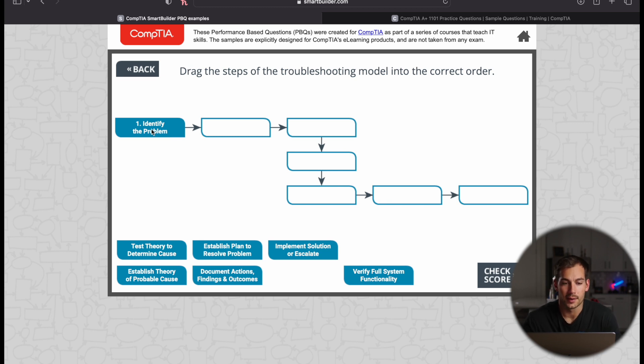That is the problem. Now the next step in CompTIA's protocol here is to establish a theory of probable cause. So what's the most likely thing that could be causing my computer to be slow for no reason? Maybe we think that it is some sort of malware.